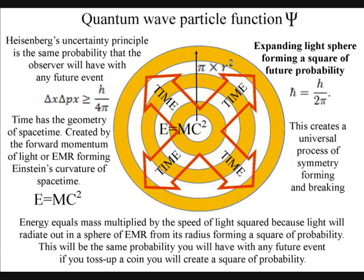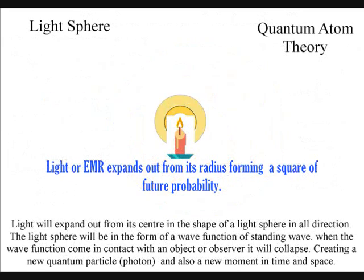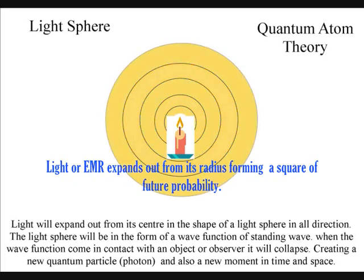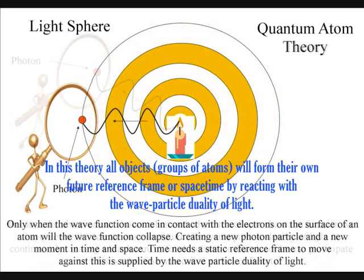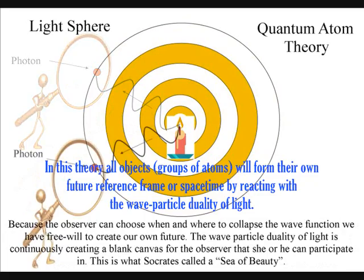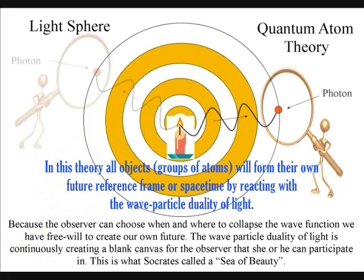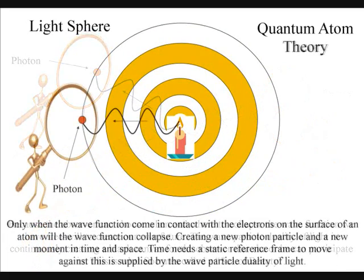We live in a dynamically evolving universe of continuous change because of the probabilistic nature of the wave-particle duality of light. Only if light waves come in contact with an object will they form new photons of quantized energy that will have a unique position in space and time.